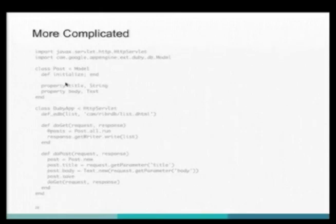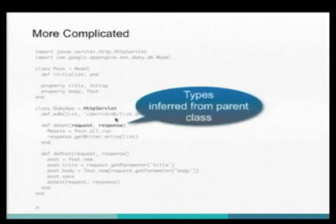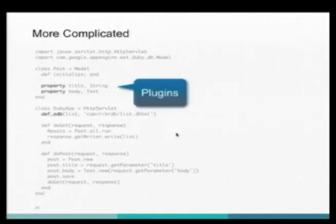Here's a more complicated Doobie app — as far as I know, this is the most complicated Doobie app that's been written so far. It fits on a page, which is not great. This is a lot like what John was showing. We've got a model — this is using a Doobie plugin. And then we have a servlet here, which is a Java servlet we're creating. We don't have to declare the types here because HTTP servlet has this abstract doGet method, so it automatically figures out that request has to be an HTTP servlet request and response has to be an HTTP servlet response. Then we have compiler plugins doing these things here.